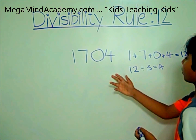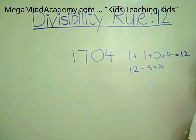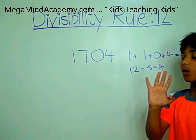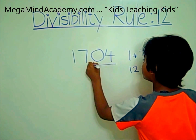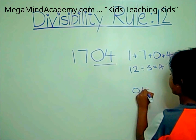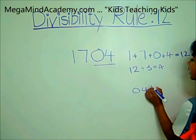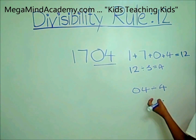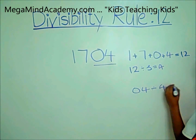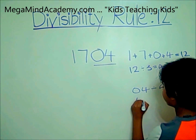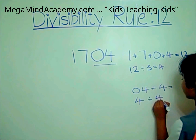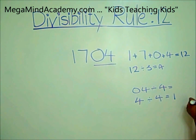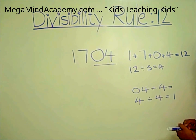So that means 1,704 is divisible by 3. Let's see if 1,704 is divisible by 4. We take the last two digits: 0 and 4, that's 04. 04 divided by 4 is the same as 4 divided by 4, which equals 1 without any remainder. So let's check.